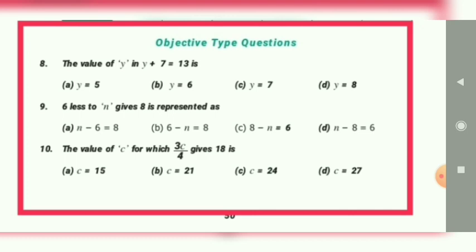The value of c for which 3c by 4 gives 18. You have to substitute the value for c which gives the answer 18. So substitute 15 means you won't get answer. c equals 21 also you won't get answer. c equals 24, that is multiple of 4: 1 four is 4, 6 fours are 24.